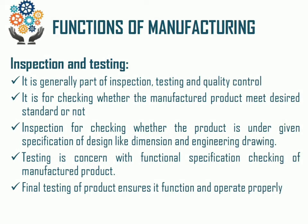Inspection and testing is the final function of manufacturing. Inspection, testing, and quality control check whether the manufactured product meets the desired standard. When raw material arrives at the shop floor, inspection is carried out to assure its quality. Inspection is required for raw material, in-process material, and finished products — checking whether the product is within the given design specifications such as dimensions and engineering drawings. Testing is concerned with checking the functional specifications of the manufactured product.